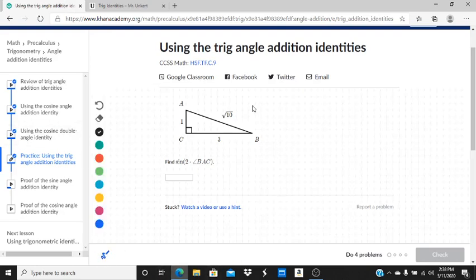Okay, so let's rewrite this a little bit. So this here is going to be equal to 2 times the sine of angle BAC times the cosine of the angle BAC.